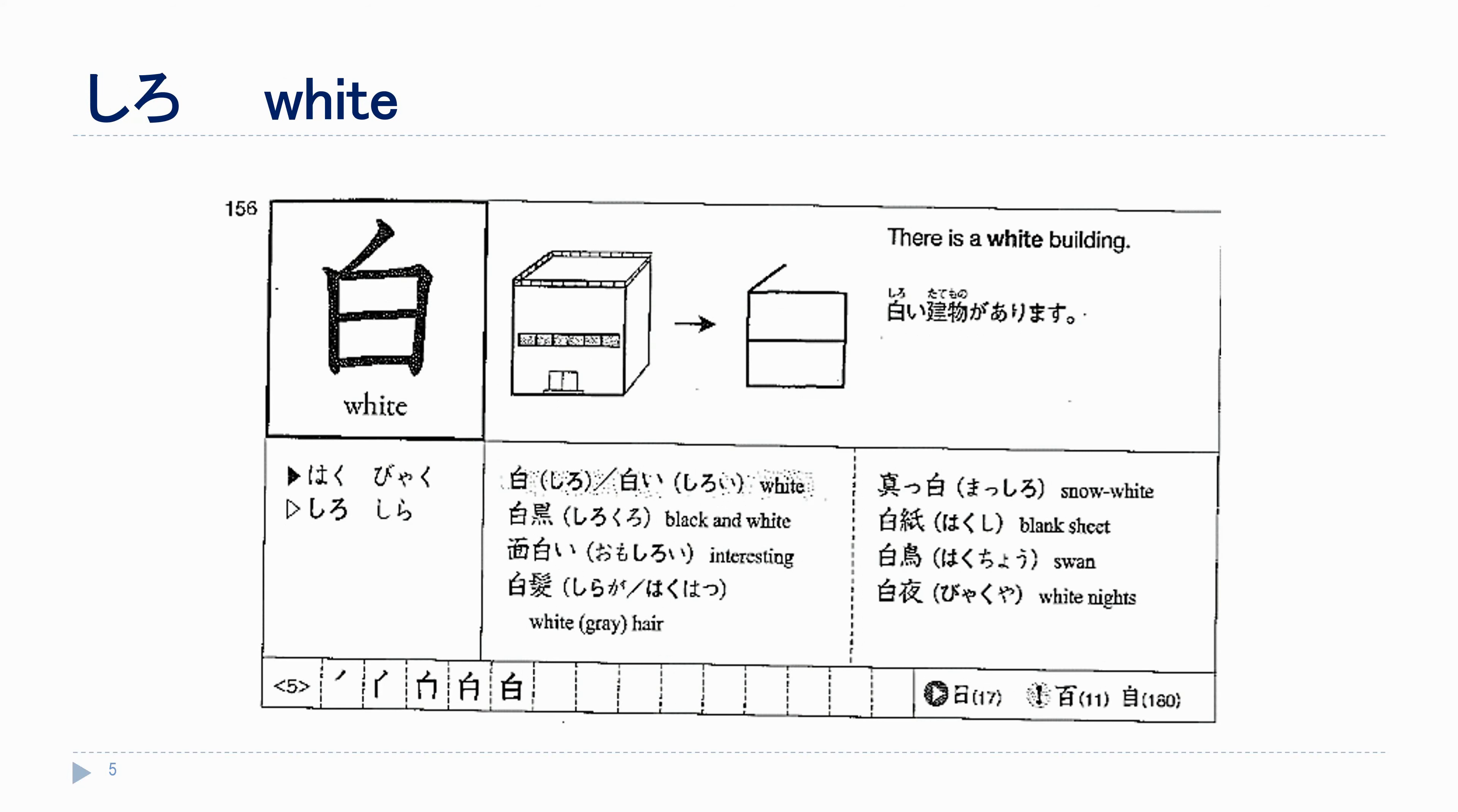Another color. This one a much simpler kanji. We start with いち, then に, さん, よん, go.